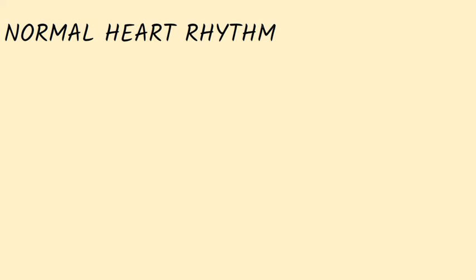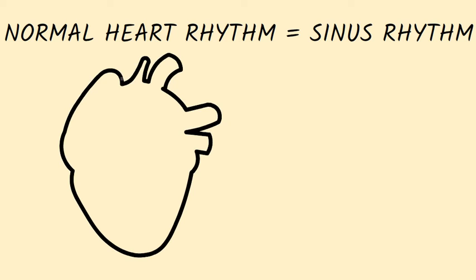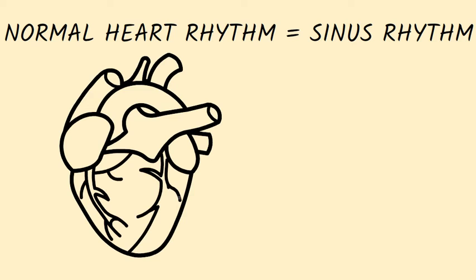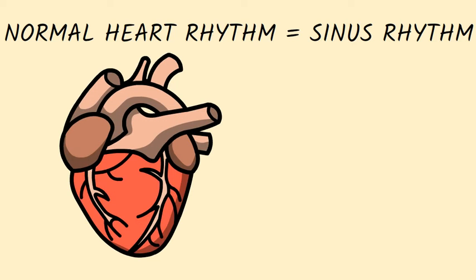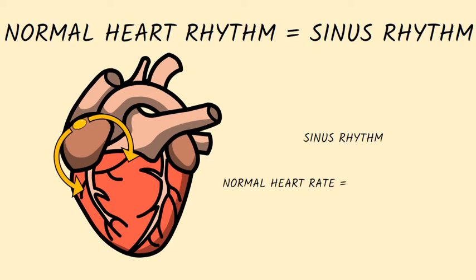The normal heart rhythm is called the sinus rhythm, which is named by the sinus node. The sinus node, also known as the heart's natural pacemaker, is a group of specialized cells in the right atrium of the heart that controls the heartbeat. It continuously generates electrical impulses and sets the normal heart rhythm, which is the sinus rhythm, and normal heart rate, which is 60-100 beats per minute.